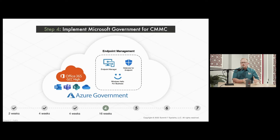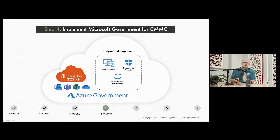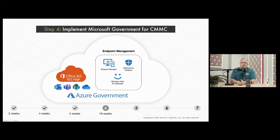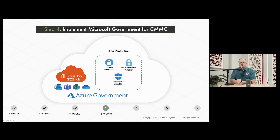Next is endpoint management. We have identity and multi-factor checked off; now we need to manage the devices that will have CUI on them — iOS, Android, Windows, and Mac. We apply all controls to those devices, ensure endpoint logging is in place, and use Windows Hello for Business to add multi-factor authentication at the desktop level — which is also a common cyber security insurance requirement. Two birds with one stone.